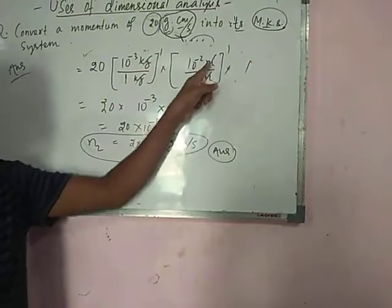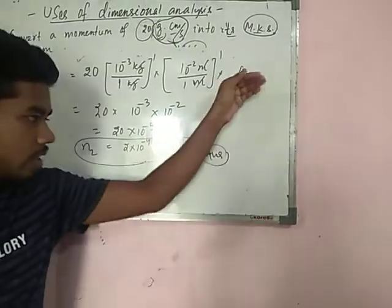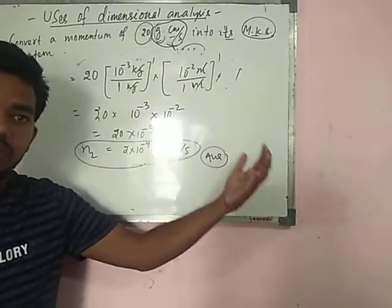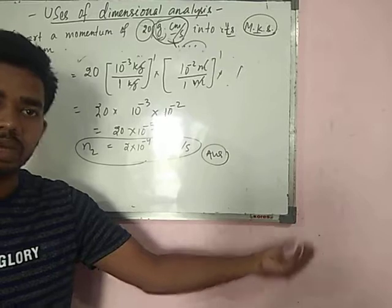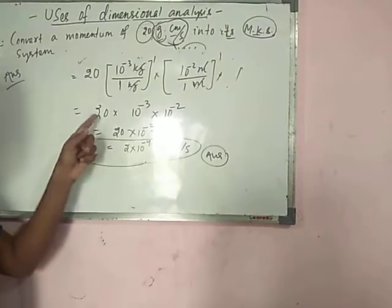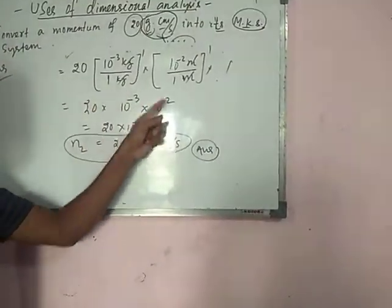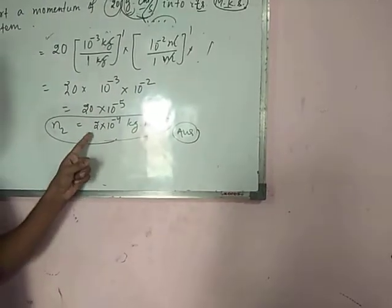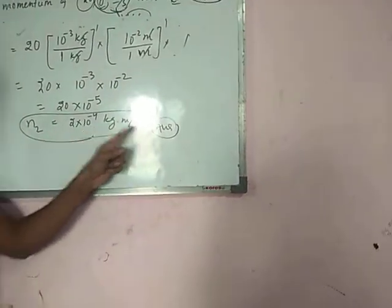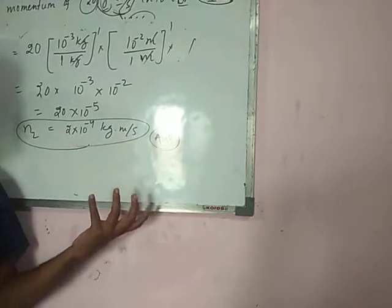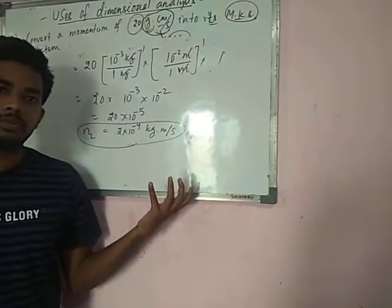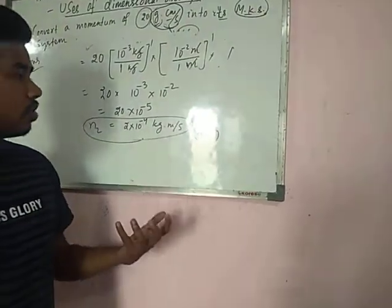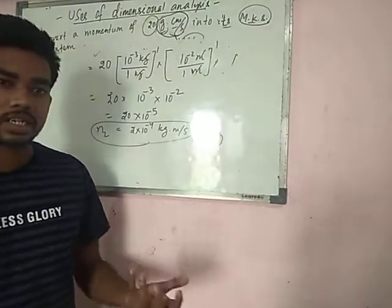Now kg cancels with kg, meter cancels with meter, and 1 second by 1 second is 1. So we get 20 times 10⁻³ times 10⁻², which equals 20 times 10⁻⁵, and simplify to 2 times 10⁻¹ kg-meter per second. This is the process. We will explore more examples in the next classes. Thank you.